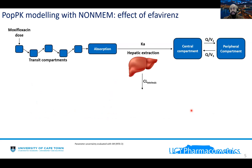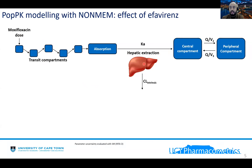Once we collected all the data, we used software to create a model. In general, we obtained a two-compartment model, as my colleagues who spoke before me showed — describing the process to develop such a model. Here I'm presenting the final version briefly. After the moxifloxacin oral dose is given, we assume the drug is distributed along transit compartments to complete the absorption. Before moving to the central compartment, there is a first-pass effect of moxifloxacin, meaning the liver extracts a certain amount before distribution to the systemic circulation. The remaining amount then moves along the central compartment and also to a peripheral compartment.